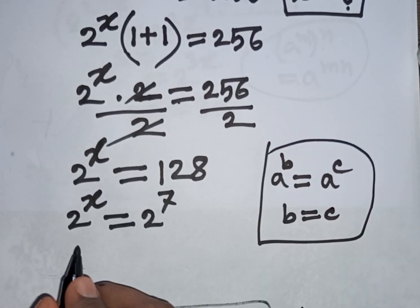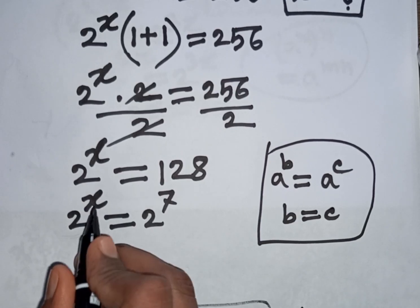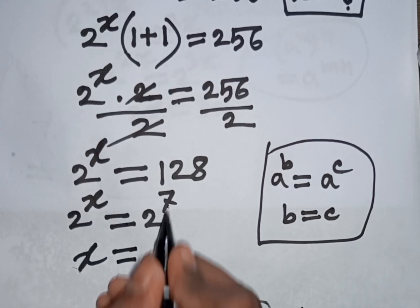So, according to this rule, I compare here, 2, 2 will be cancelled, power x is equal to power 7.